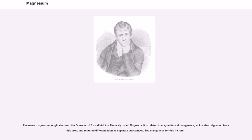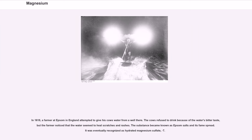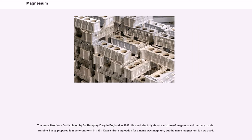The name magnesium originates from the Greek word for a district in Thessaly called Magnesia. It is related to magnetite and manganese, which also originated from this area and required differentiation as separate substances. In 1618, a farmer at Epsom in England attempted to give his cows water from a well there. The cows refused to drink because of the water's bitter taste, but the farmer noticed that the water seemed to heal scratches and rashes. The substance became known as Epsom salts, and was eventually recognized as hydrated magnesium sulfate. The metal itself was first isolated by Sir Humphrey Davy in England in 1808. He used electrolysis on a mixture of magnesia and mercuric oxide. Antoine Bussy prepared it in coherent form in 1831. Davy's first suggestion for a name was Magnium, but the name Magnesium is now used.